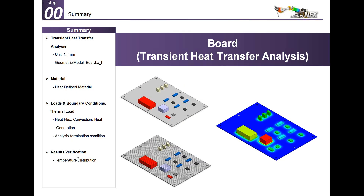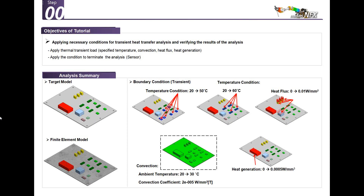Now I'll show a second example: a transient heat transfer analysis of a PCB board. The conditions are: temperature conditions on the chip that are changing, heat flux that is changing, heat generation that is changing, and ambient temperature that is increasing. To simulate these changing boundary conditions, I have only one alternative: use transient heat transfer.